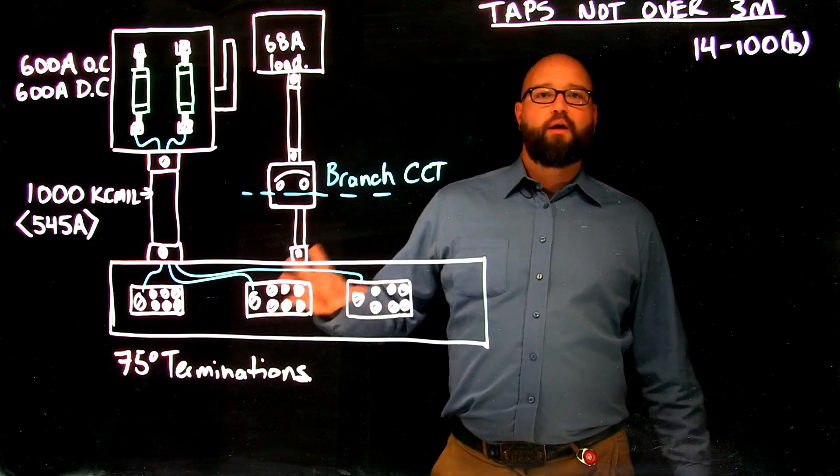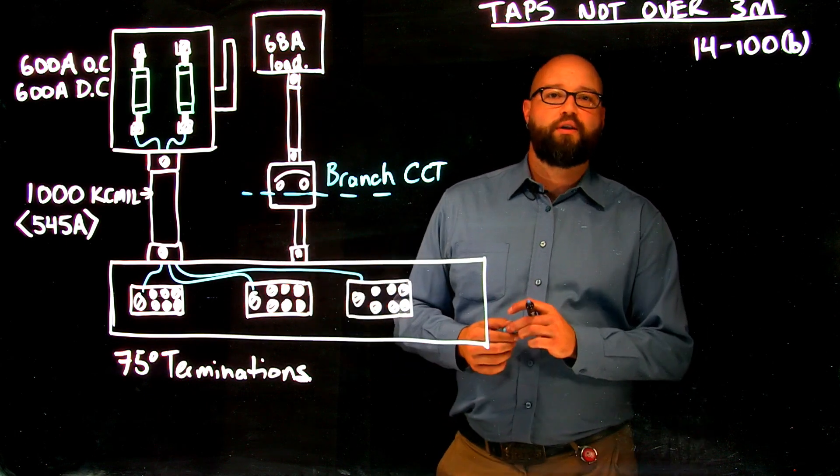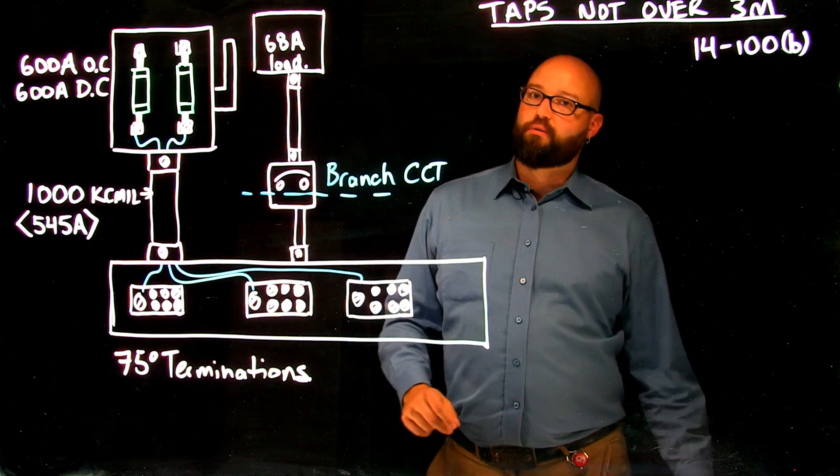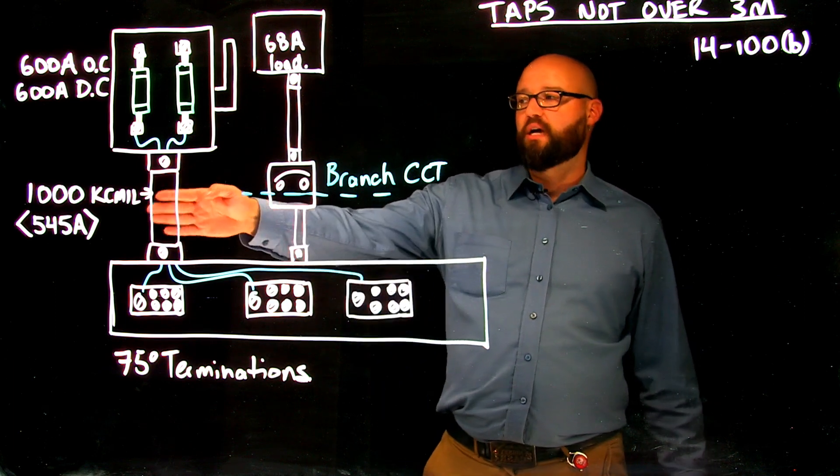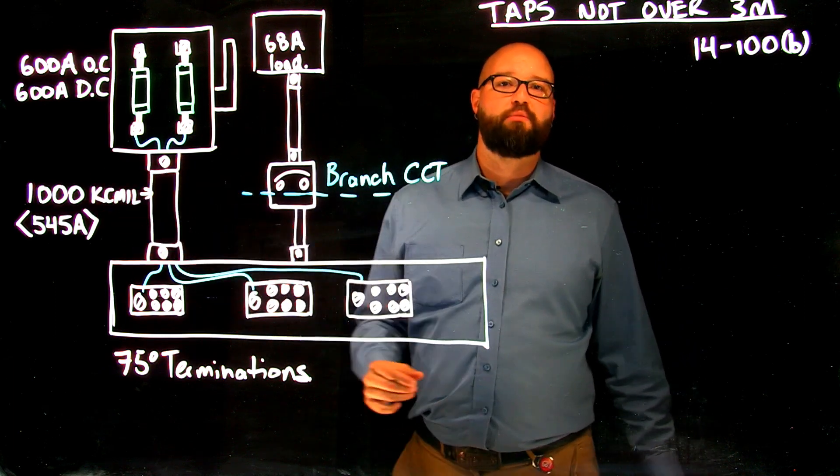If we do not meet the requirements of 14100, our tap conductors would not really be tap conductors. They would just be the same size conductors as our thousand KC mil feed.